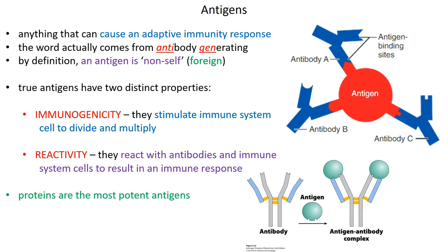Proteins tend to be the most potent antigens — they can elicit the most severe immune response. The larger and more complex the protein structure, the more of a response it can generate.